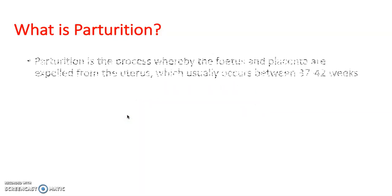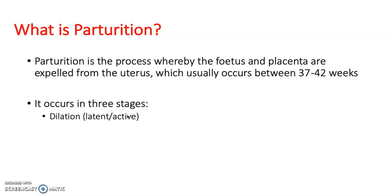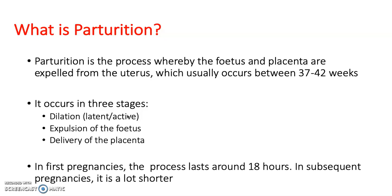So what is parturition? It's the process by which the foetus and the placenta are expelled from the uterus, which usually occurs between 37 and 42 weeks. It is diagnosed by painful uterine contractions that accompany dilation and effacement of the cervix. It occurs in three stages: dilation, expulsion of the foetus, and delivery of the placenta. In first pregnancies, the process lasts around 18 hours; in subsequent pregnancies, labour is a lot shorter.